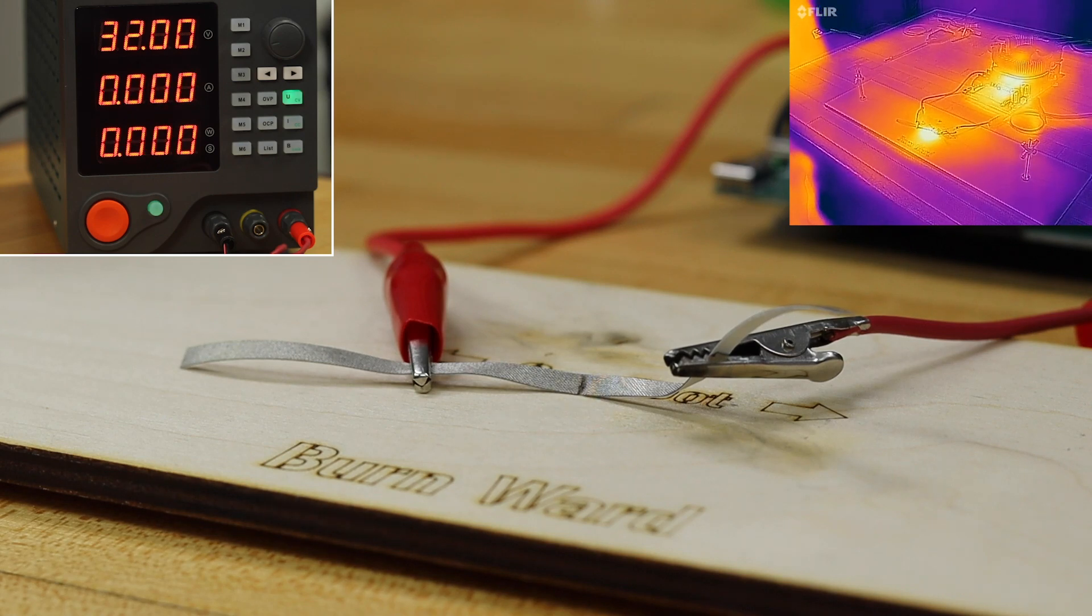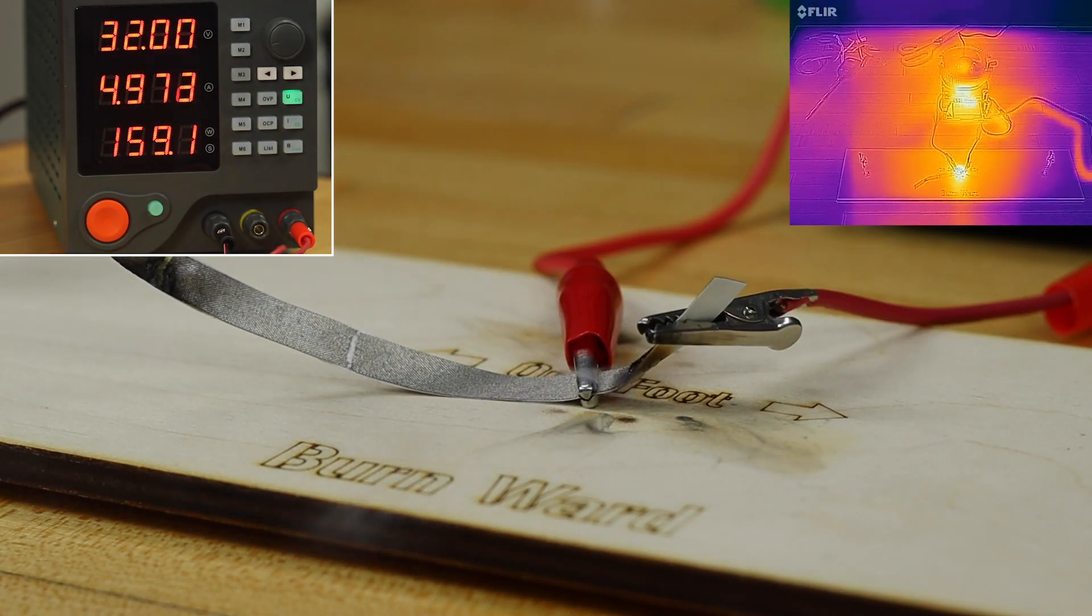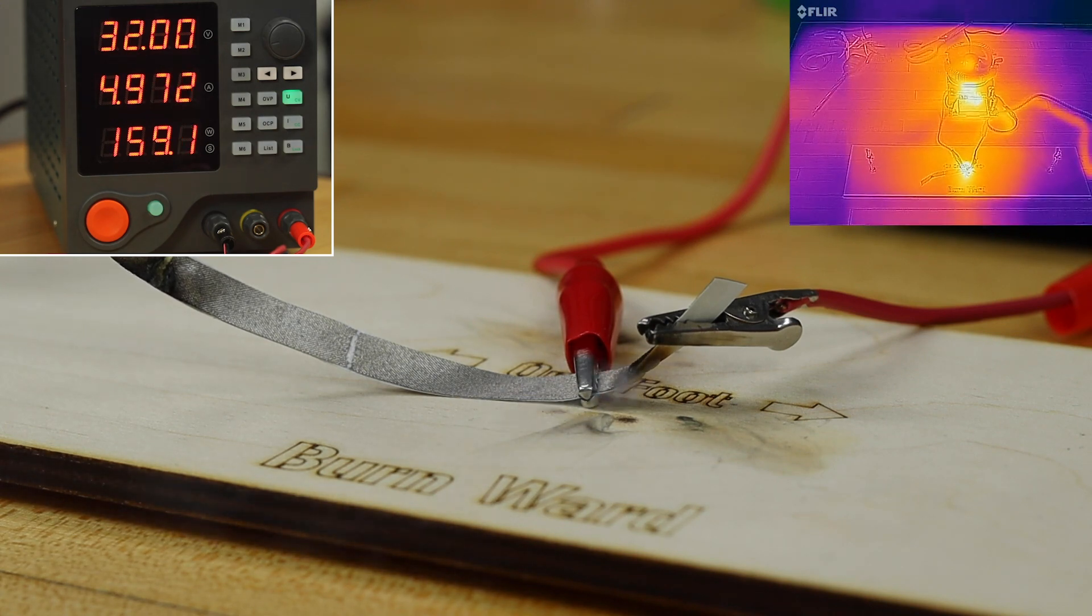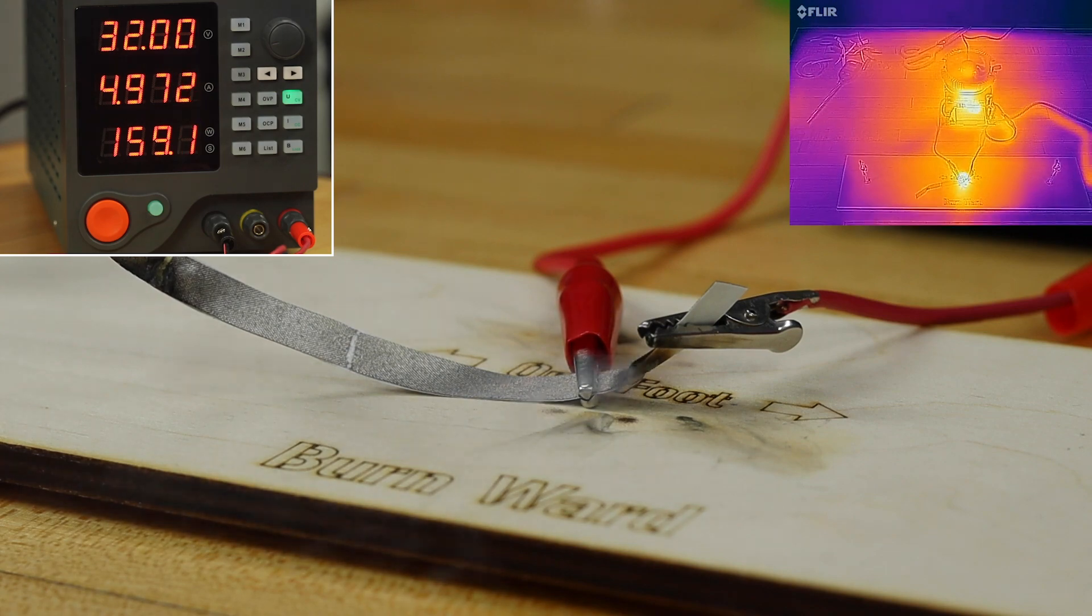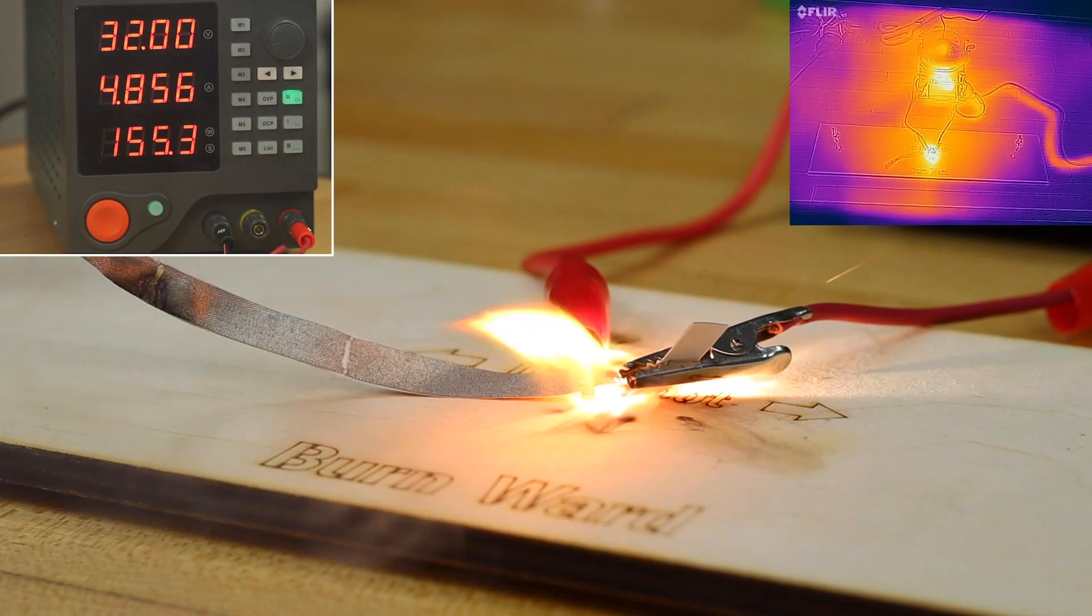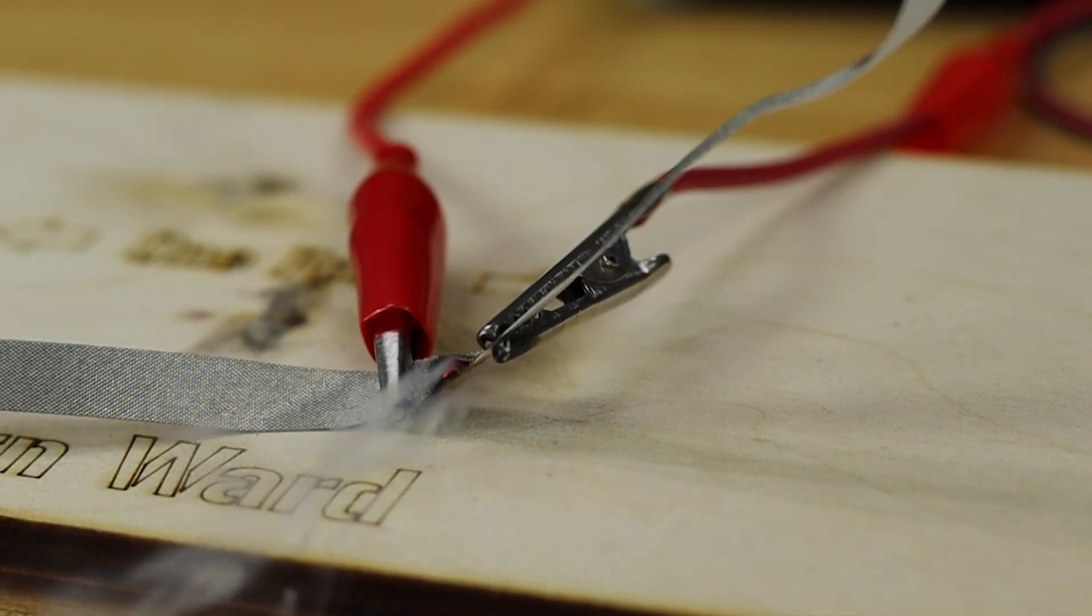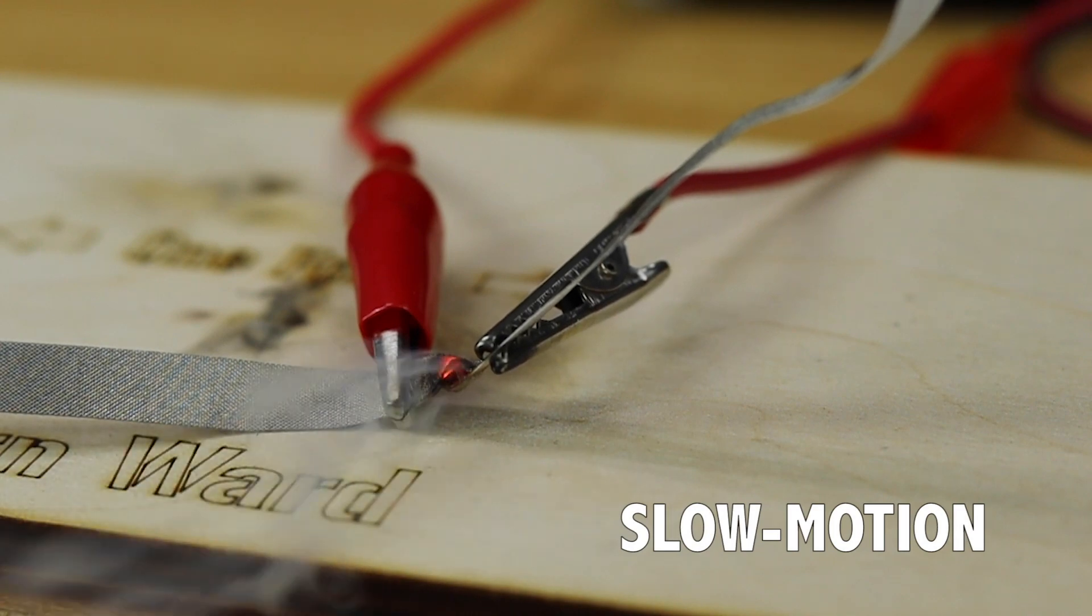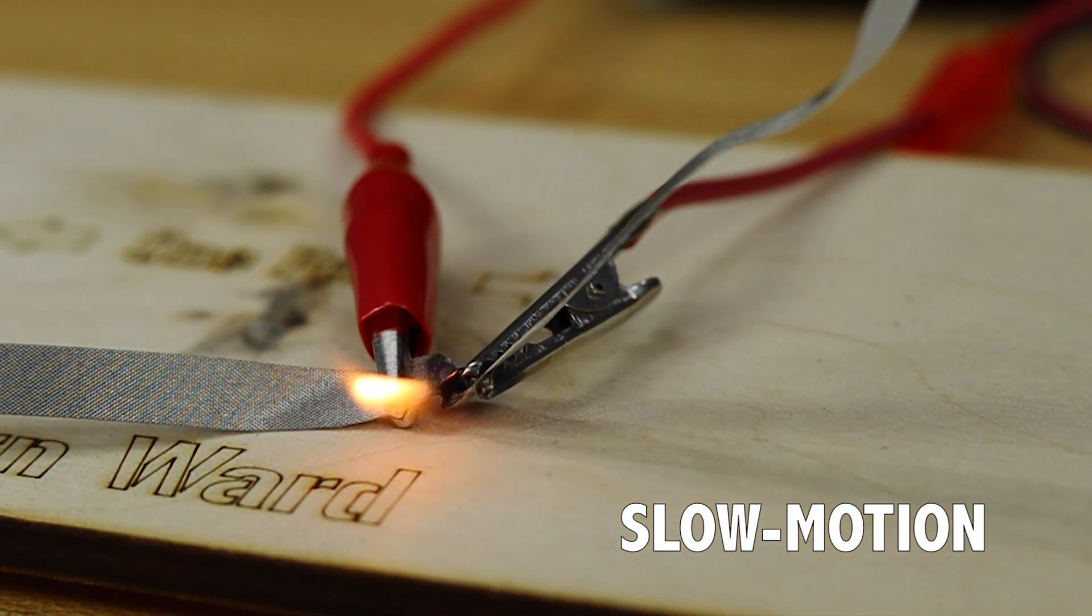We finally found that by conducting relatively high current through a very short piece of quarter inch tape we could concentrate the heat enough to deform, smoke, and finally burn the tape. This took a lot of attempts. We had to repeat the experiment a number of times more before we finally got a slow motion close-up of actual fire.